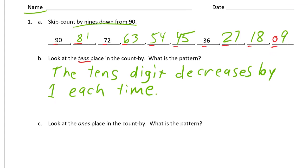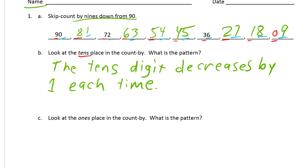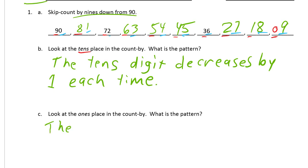And now it says look at the ones place in the count by and see what the pattern is there. I'll use blue for that one. So we're looking at the ones place. It's zero, one, two, three, four, five, six, seven, eight, nine. The ones digit increases by one each time.